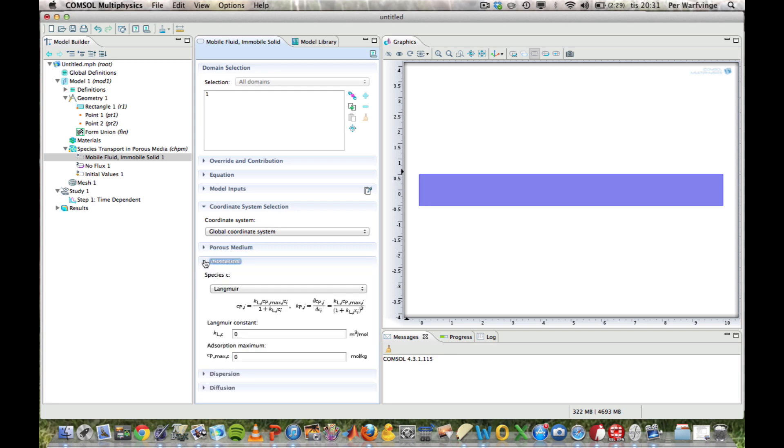When it comes to sorption, there are various ways to enter that, various sorption models. I'll use something called user-defined, and that is really the simple KD model. But as you see, it's called KPC, and we have the value 0.001. Close that one.